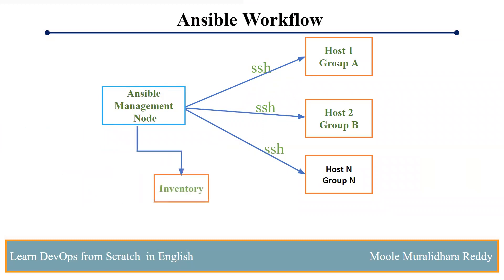For these destination servers, we can create an inventory inside the Ansible server. Inside the Ansible server, we declare all the destination servers' IP addresses or fully qualified domain names. For example, Group A has host1 declared, and Group B has host2 and host3 declared. You can declare groups this way. When you call a particular group and run the playbook, it will communicate to the servers in that group and run whatever is written inside the playbook.